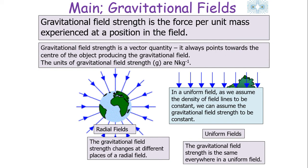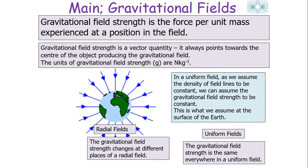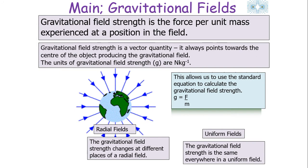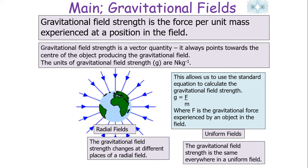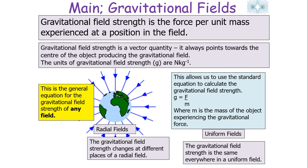In a uniform field, we assume the density of field lines to be constant, so we can assume the gravitational field strength to be constant. This is what we assume at the surface of the Earth. This allows us to use the standard equation to calculate gravitational field strength: g equals F over m, where F is the gravitational force experienced by an object in the field, m is the mass of that object, and g is the gravitational field strength.